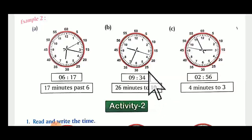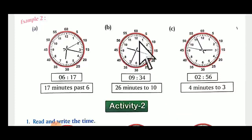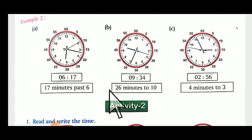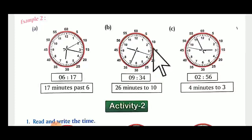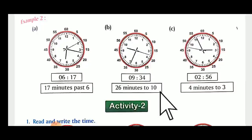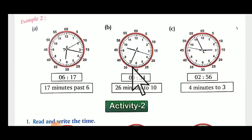Next: nine thirty-four is given — twenty-six minutes to ten. That means after nine thirty, what is going to be next? It will be ten o'clock. Before thirty it is past, whereas after six, seven, eight, nine, ten — you write minutes to, meaning so much time is remaining. So twenty-six minutes to ten: count five, ten, fifteen, twenty, twenty-five — twenty-six minutes are remaining to ten o'clock.